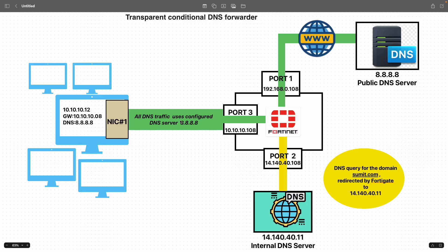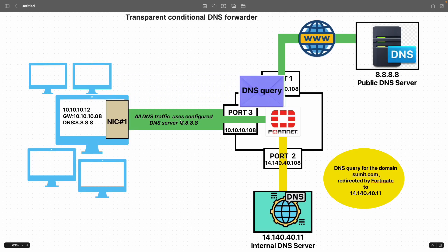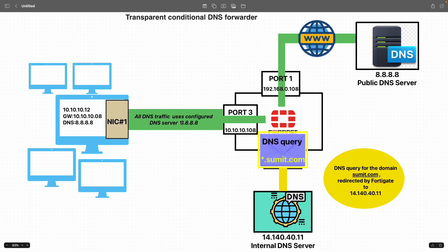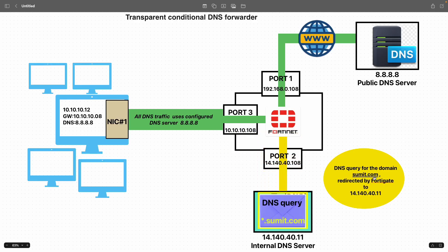Consider a scenario where you have your network and all the DNS traffic should go to an external DNS server, and all the DNS queries for a specific domain — in my case, sumit.com — should go to an internal DNS server. The client machine will be configured with an external DNS server 8.8.8.8, and all the changes should happen on the FortiGate firewall. So how do we achieve that?